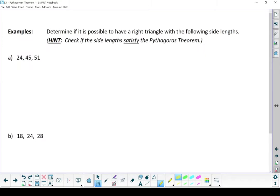So, if the question asks if it's possible to have a right triangle with the following side lengths, all we have to do is check. Do those side lengths satisfy the Pythagorean Theorem? Do you have a Pythagorean Triple? We're looking for c squared equals a squared plus b squared.